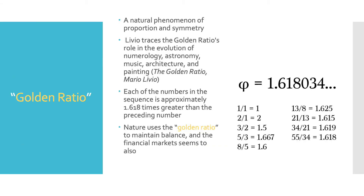The golden ratio is a natural phenomenon of proportion and symmetry. In Mario Livio's book, The Golden Ratio, he traces the golden ratio's role in the evolution of numerology, astronomy, music, architecture, and painting, showing that this ratio is known throughout the world. Each of the numbers in this sequence is approximately 1.618 times greater than the preceding number, which is the golden ratio. To get this golden ratio, you divide one of the numbers in the series by its preceding number — for example, 55 divided by 34, which equals 1.618.